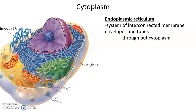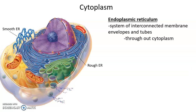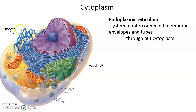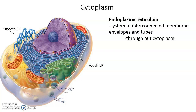The endoplasmic reticulum comes in two kinds: smooth ER and rough ER. The endoplasmic reticulum is a system of interconnected membrane envelopes and tubes, made out of phospholipid bilayers — very similar structurally to the plasma membrane.